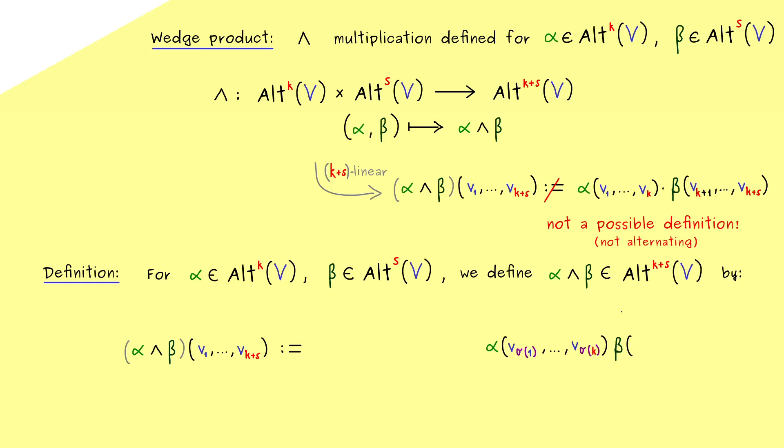And now we have the same with beta where we also use the permutation sigma. The only difference is now that we can only put in s vectors here. So we go from the index sigma of (k+1) to the index sigma of (k+s).